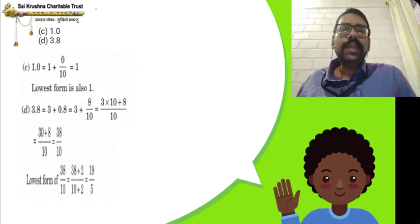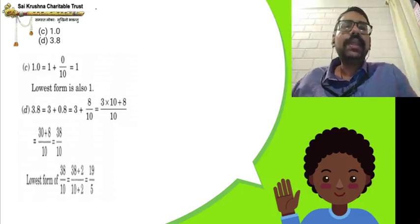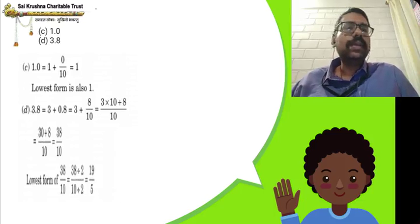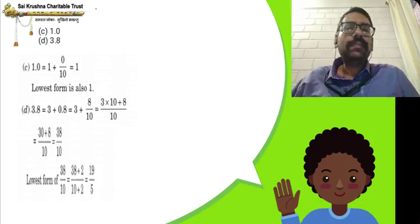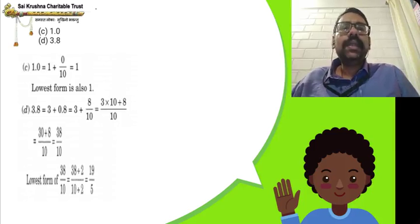Next, 3.8 can be written as 3 plus 0.8. 0.8 can be written as 8 divided by 10. So 3 can be written as 3 by 1, because any number divided by 1 is the number itself. We will convert both fractions to like fractions — 3 by 1 and 8 by 10. In 3 by 1, the denominator is 1, so multiply by 10 to get denominator 10. We multiply both numerator and denominator by 10 to get 30 by 10. So 30 by 10 and 8 by 10 are like fractions.